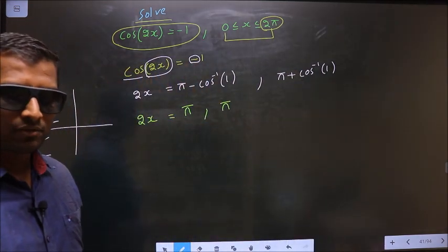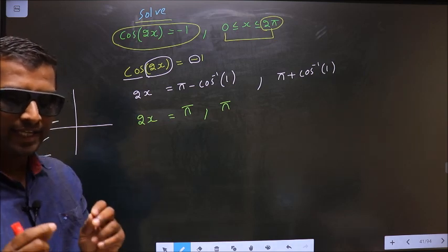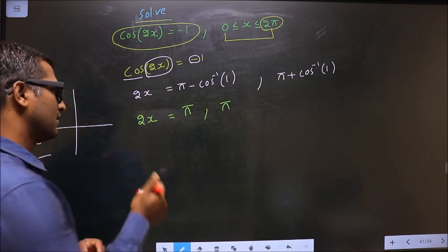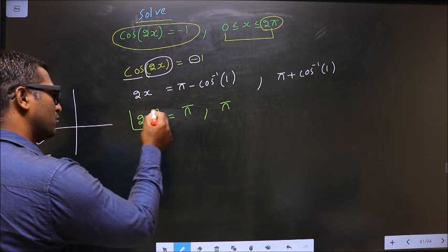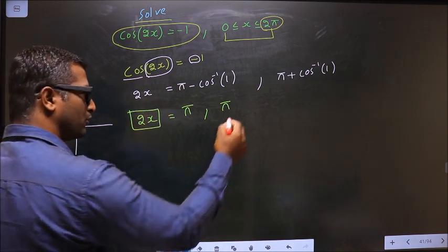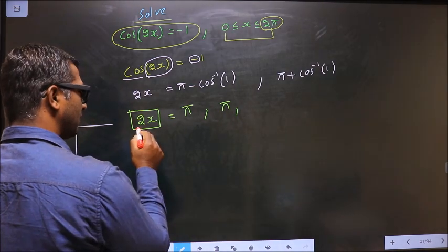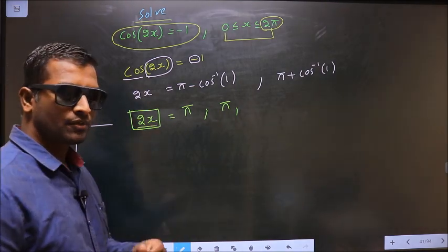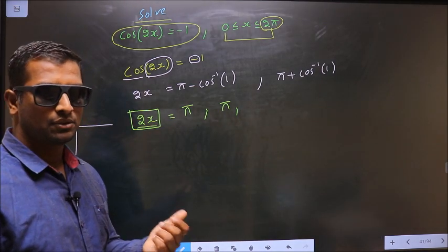Now the question arises: in what interval should the values for 2x lie? Question two: how many values shall I find for 2x? To answer that, we do this.